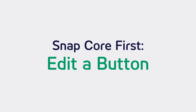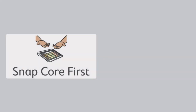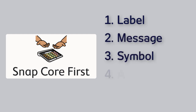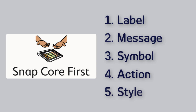Let's learn how to edit a button in the Snapcore First software. The process and the editing features I'm about to show you are available no matter the page set your communicator is utilizing. A button in Snapcore First has five main components: the label, message, symbol or picture, action, and style.